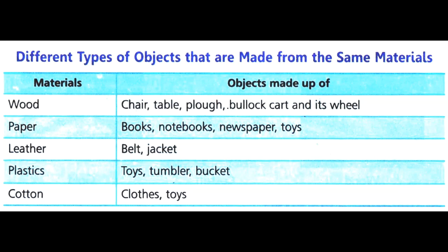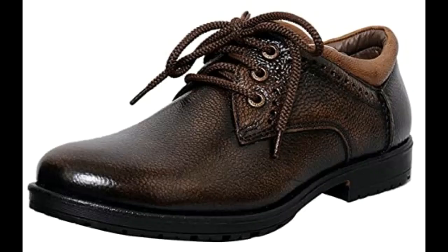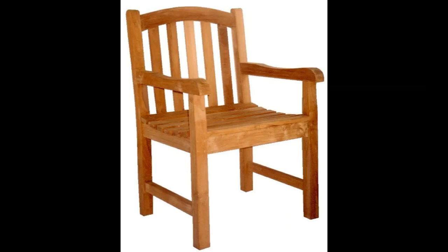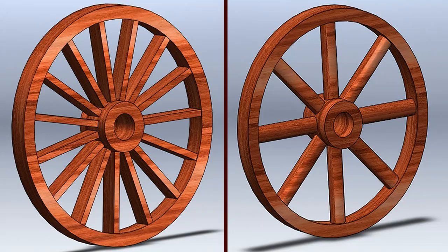Different types of objects can be made of the same material. Paper is the material, but you can make books, notebooks, newspaper, and toys from it. Plastic can be made into a bucket or toys. Leather can be used to make belts, jackets, and shoes. Wood can be used to make a chair, a plough, or a wheel.